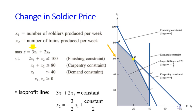The isoprofit line is obtained by setting the objective function 3x1 + 2x2 equal to a constant. If we rearrange this equation, we get x2 equals minus 3 over 2 times x1 plus constant divided by 2. So the gradient of the isoprofit line is minus 3 over 2, where 3 is currently the price of the soldier. The question we'd like to answer is: what value of soldier price keeps the current basis optimal? Basis means the set of basic variables, and our optimal solution is at point B.